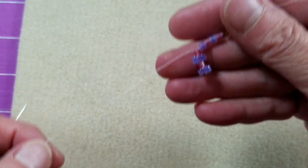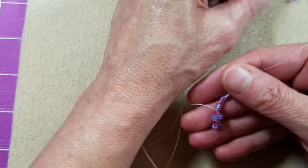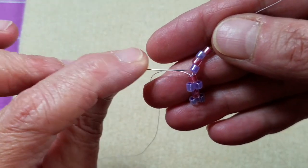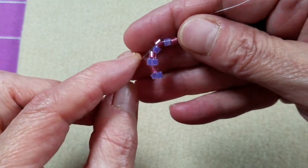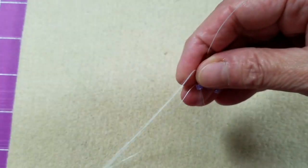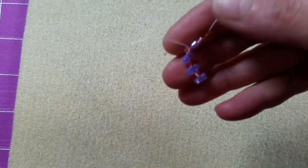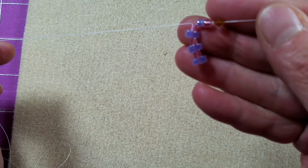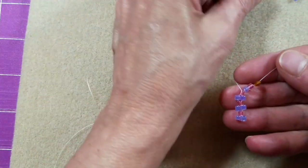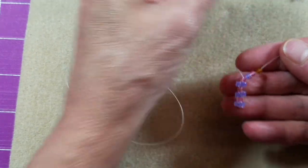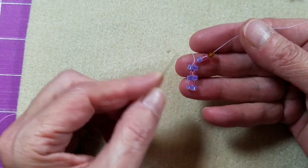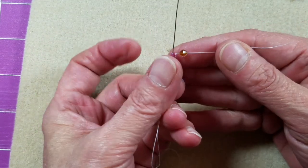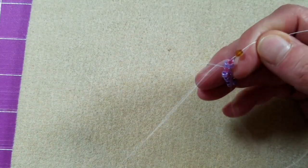I'm coming out of the next pink one, I'm going to pick up another purple one, skip over the one on my base and go through the next pink one and pull. Now that purple bead sits beside the old one. We'll do that one more time. We're coming out of this pink bead at the top, we're going to skip that purple bead and go through the very last pink bead we picked up and pull our thread through.